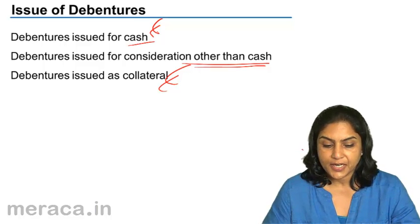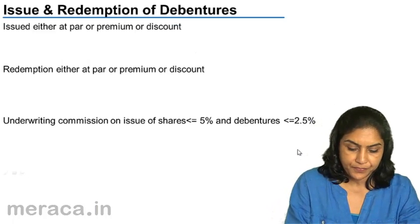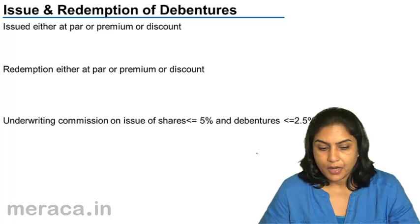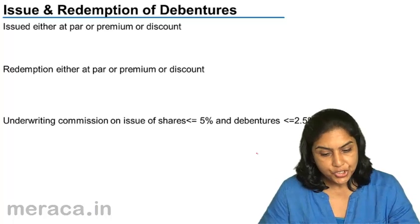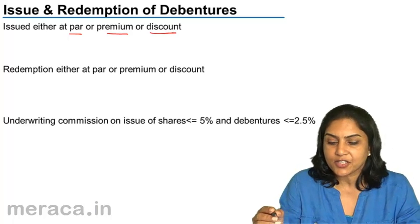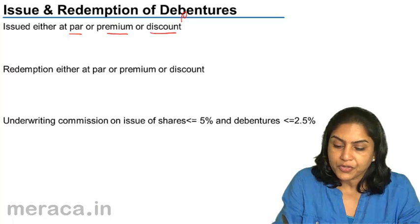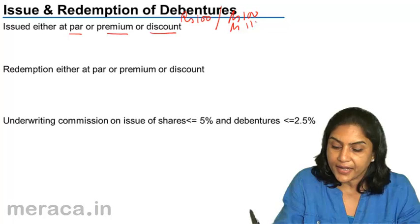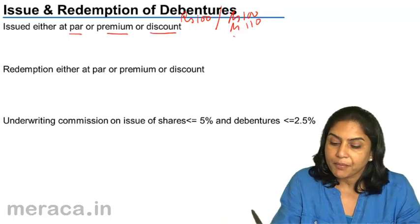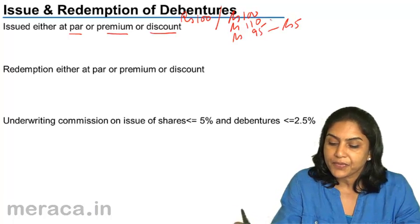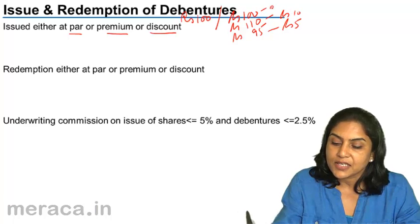Let us first take debentures issued for cash. Debentures may be issued at par, premium, or discount. Just like in the case of shares, if the face value of the debenture is Rs. 100, it may be issued at Rs. 100, that is par. It may be issued at Rs. 110, that is issued at a premium. Or it may be issued at Rs. 95, which means at a discount of Rs. 5. This is a premium of Rs. 10. This is at par.